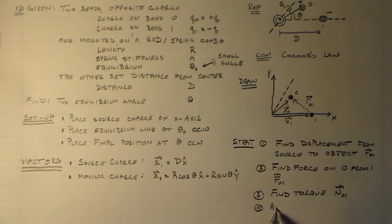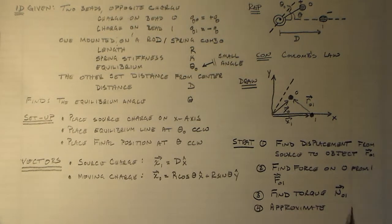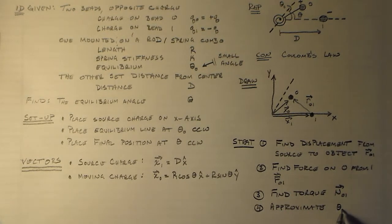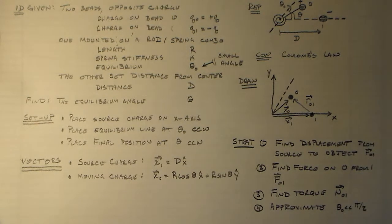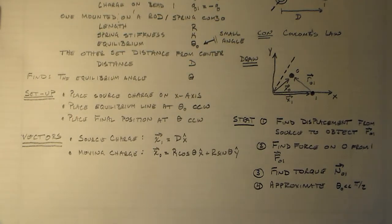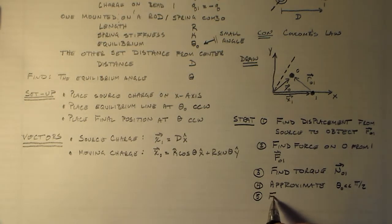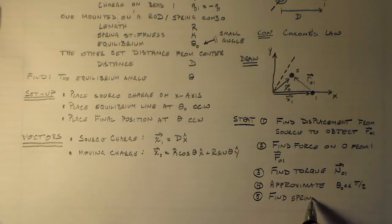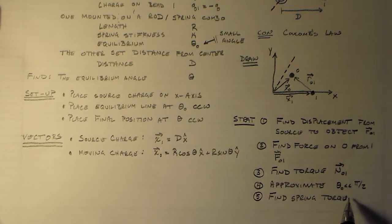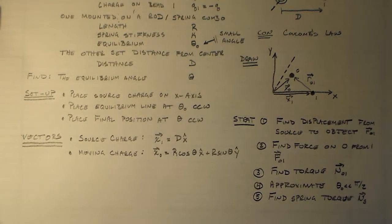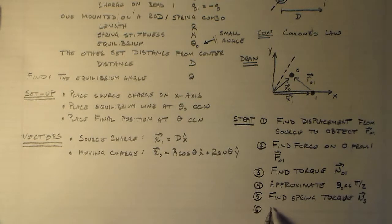Four, we'll use the small angle approximation. So, that means that theta zero is much less than pi over two. And five, find the spring torque. That'll be extremely simple. And six, balance it all out. So, balance the torques. Set them equal to zero and solve. And we're good.